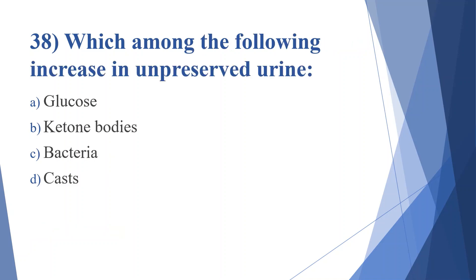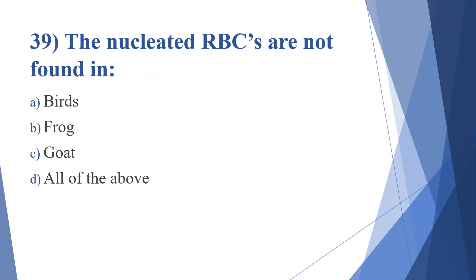Thirty-eighth question: which among the following increases in unpreserved urine? Option A: glucose. Option B: ketone bodies. Option C: bacteria. Option D: gas. Answer is option C, bacteria.